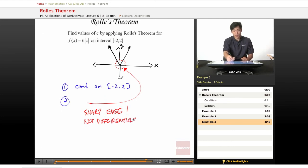And this means that we don't have to check the third condition because the second is not met. And that's all that matters that one condition is not met. So, there is no value of c that applies to Rolle's Theorem once again.